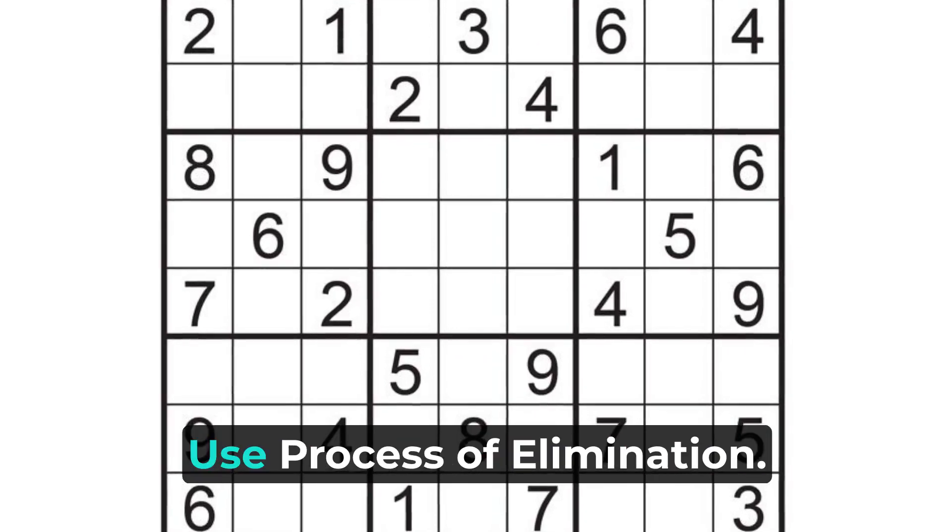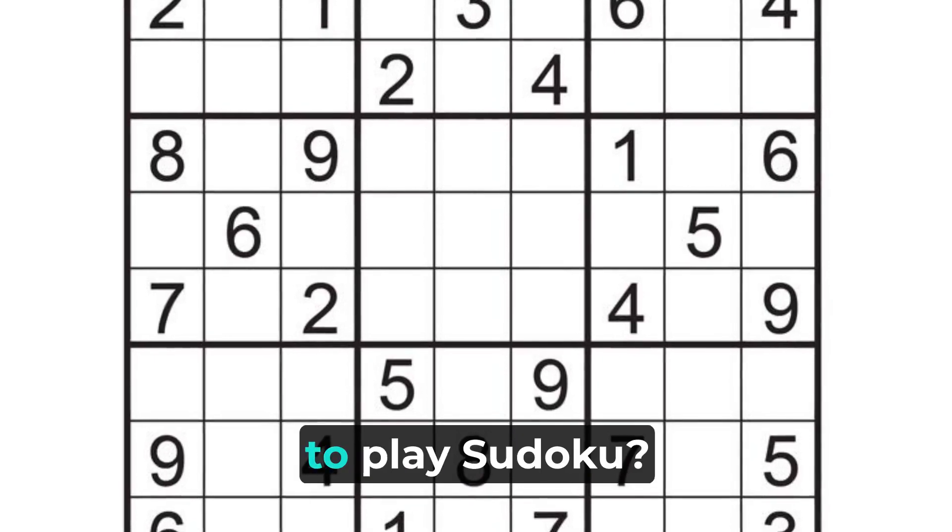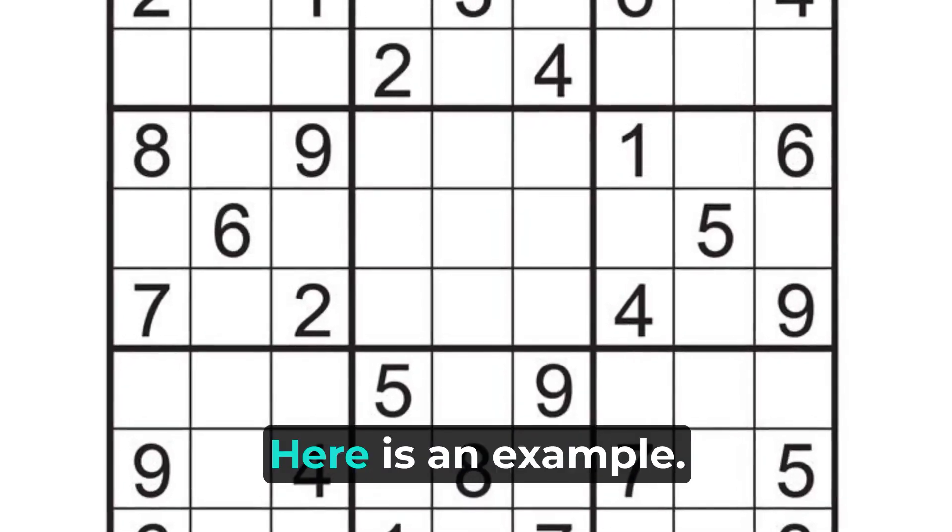Sudoku rule number four: use process of elimination. What do we mean by using process of elimination to play Sudoku? Here is an example.